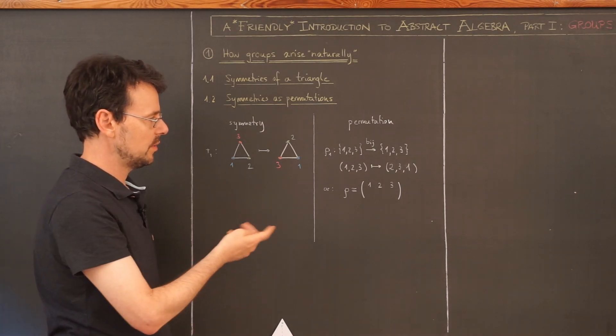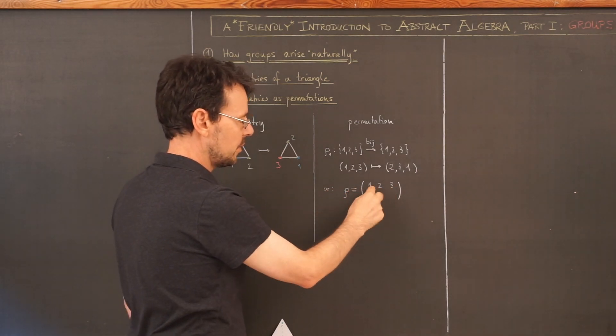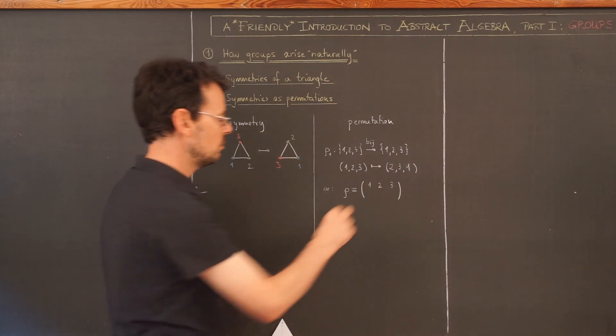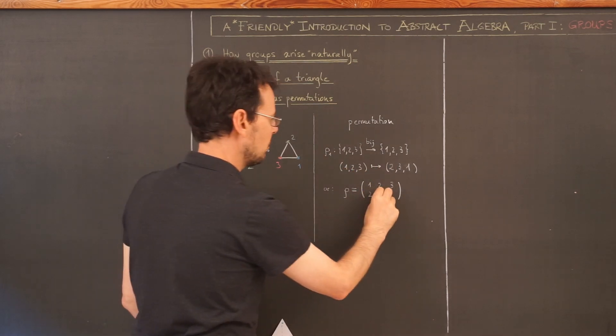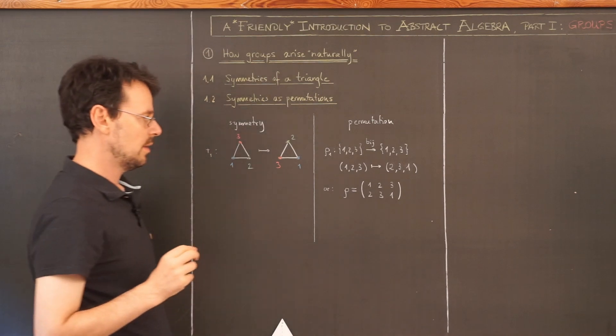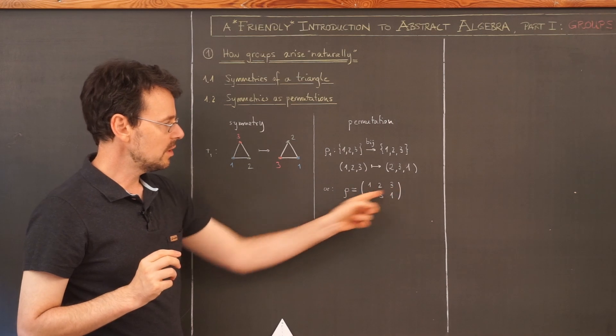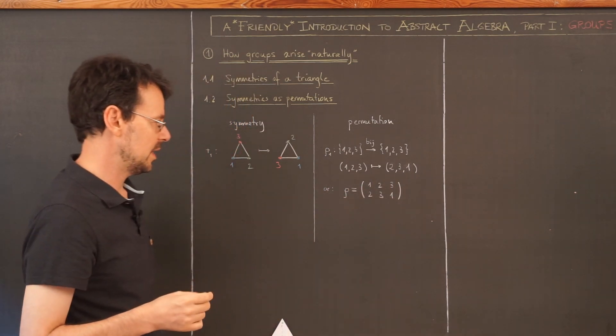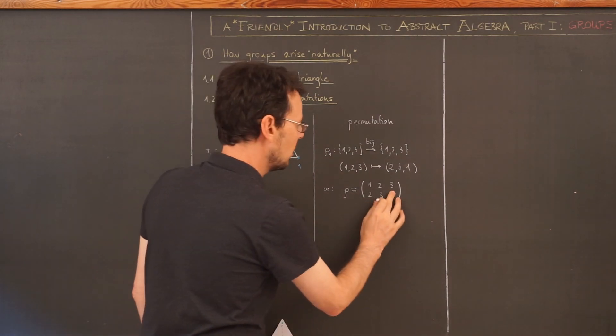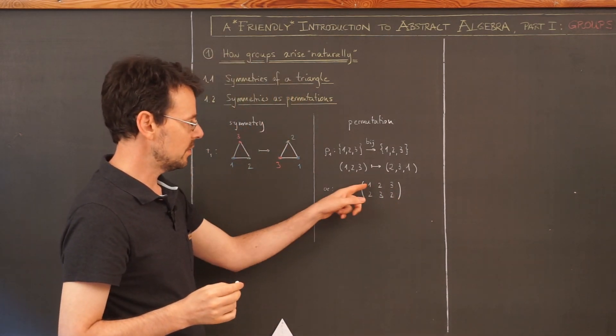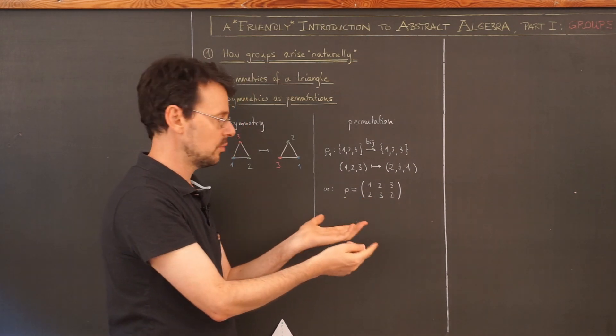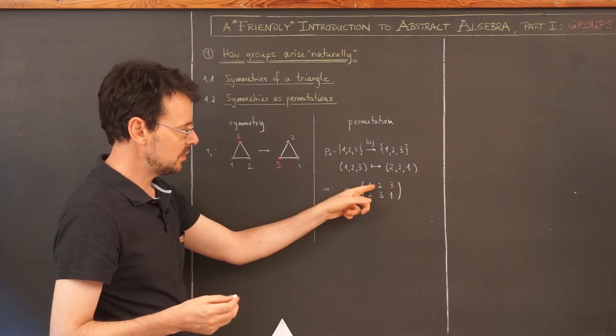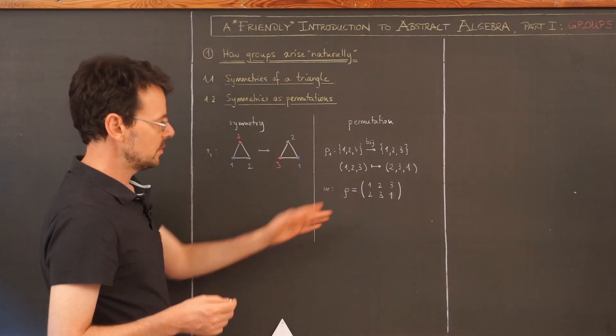Now there's a better or shorter way to denote this map. We write here the initial order of the three elements 1, 2, 3 and then below we write down the numbers to where they are mapped. So 1 goes to 2, 2 goes to 3, and 3 goes to 1. And now bijective simply means we have here and here the same numbers but possibly in a different order. This here is not allowed. This would not be bijective because 1 and 3 would get mapped to the same number 2.